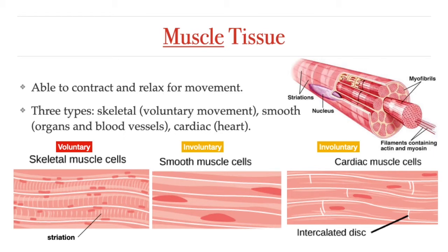For example, smooth muscle makes up our digestive tract. When you sit in class and your tummy grumbles, that grumbling sound is the result of peristalsis — involuntary rhythmic contractions of the smooth muscles of the stomach and intestines that move food and waste. That's not under voluntary control; you did not decide for that to happen. Cardiac muscle is found only in the heart. It has connections between cells called intercalated discs, which allow the cardiac muscle cells to bond and communicate with each other so that they can contract in a wave-like pattern that allows the heart to pump.